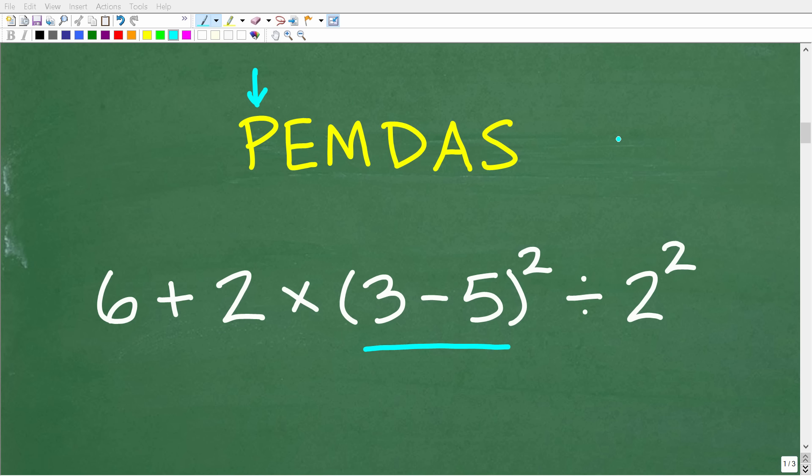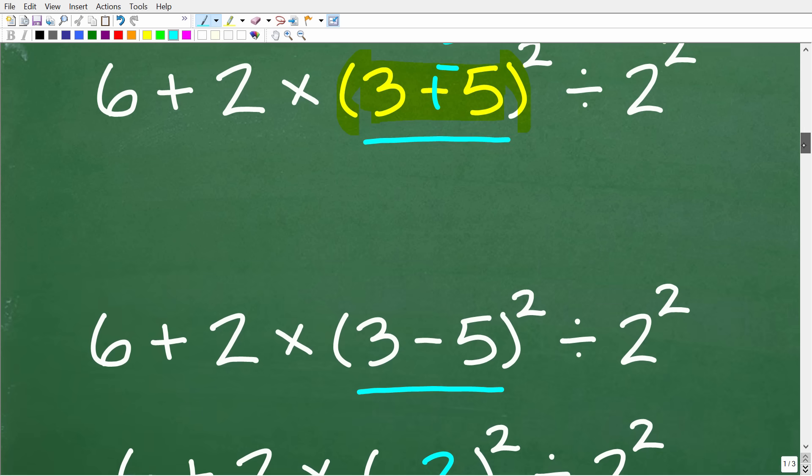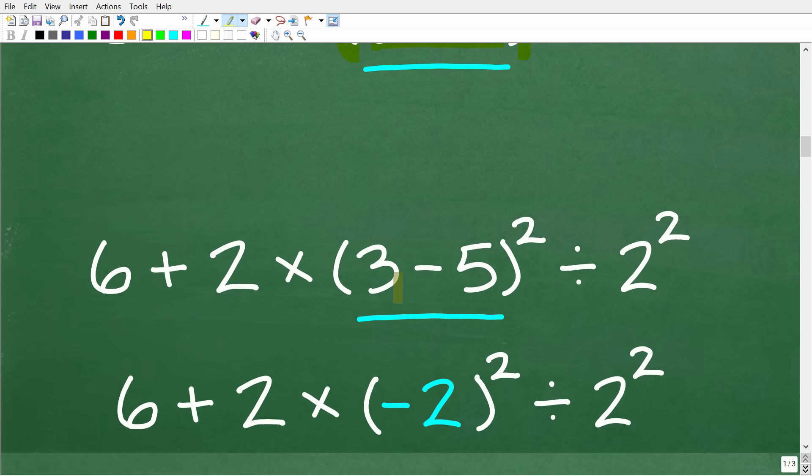So now that we understand the correct order of operations, all we have to do is follow this PEMDAS checklist from left to right and do this problem one step at a time. So we're going to start here with P and we're going to scan the problem for any grouping symbols or parentheses. Of course, we have a set right here. So our first thing is to figure out what 3 minus 5 is equal to. So you got to be careful here because we're dealing with positive and negative numbers. So 3 minus 5 is the same thing as 3 plus a negative 5. So this is negative 2.